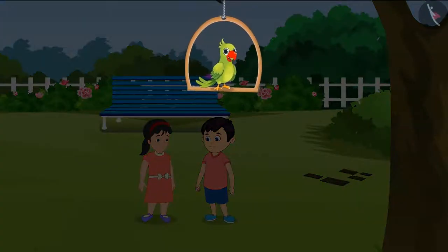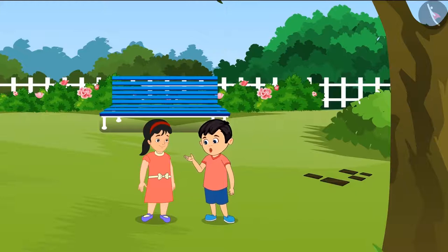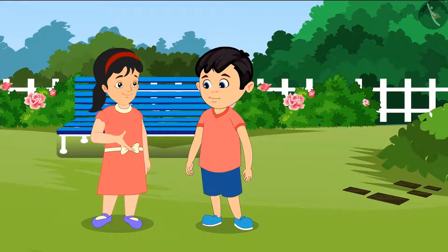Chotu and Pinky want to have a swing on the tree behind their house. Pinky, what all do we need to make a swing on the tree? A piece of wood and a rope, that's it.